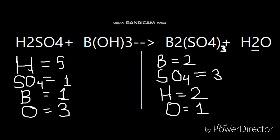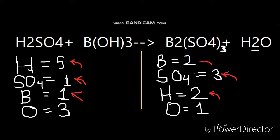If you look carefully, I have five hydrogen atoms on the reactant side and two hydrogen atoms on the product side — they are not equal. I have one SO4 compound on this side but three SO4 compounds on the other side — not equal. I have one boron atom here but two boron atoms there — not equal. I have three oxygen atoms here and only one oxygen atom there — not equal. So none of the atoms and compounds are the same on each side, meaning we have to balance all of them.